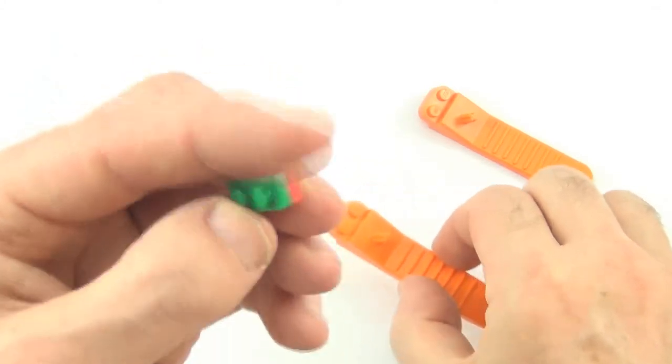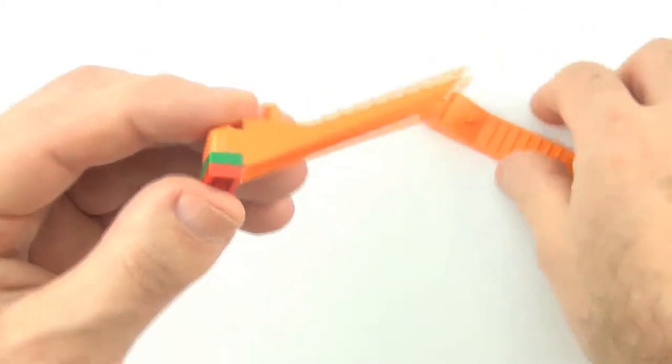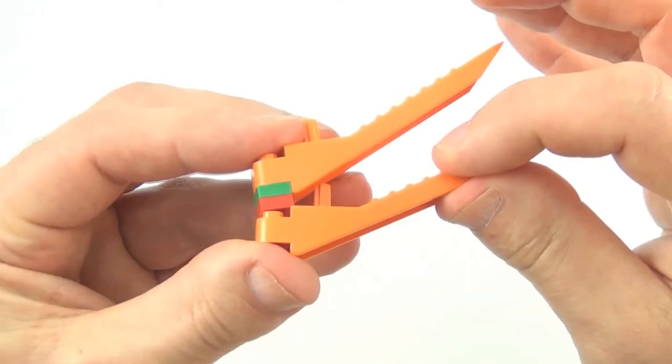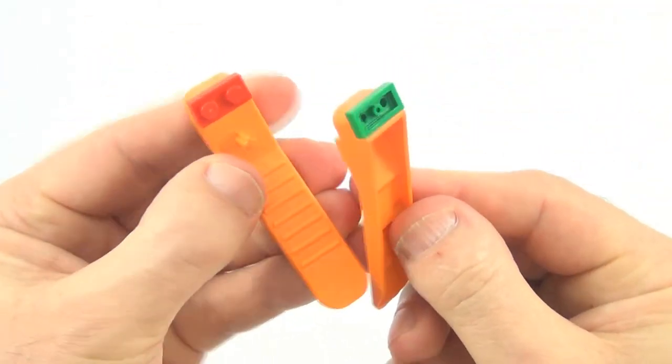Separating two 1x2 plates, simply get one brick separator, place it on top, another brick separator, place it underneath, squeeze them together, and you'll find they come apart very easily.